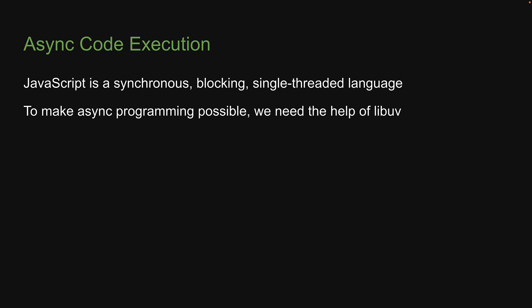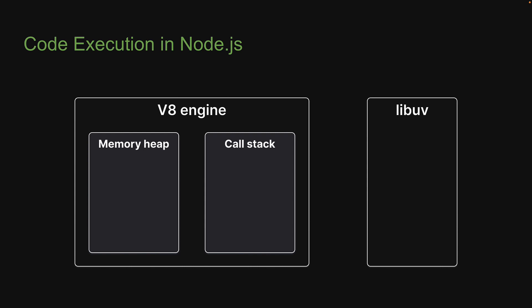Using these two points, let me now paint a picture in your mind as to how code typically executes in the Node runtime. On the left, we have the V8 engine which executes JavaScript code. It comprises of a memory heap and a call stack. Whenever you declare variables or functions, memory is allocated on the heap. Whenever you execute code, functions are pushed into the call stack, and when the function returns, it is popped off the call stack.